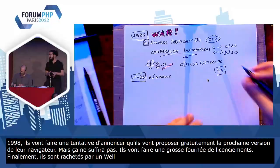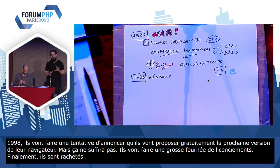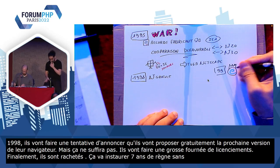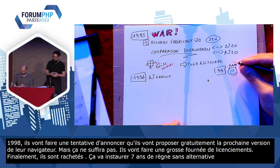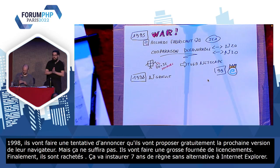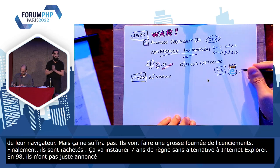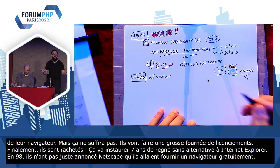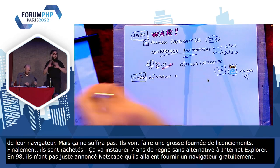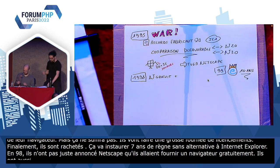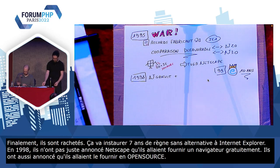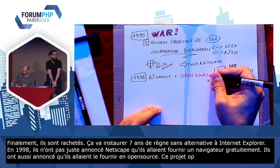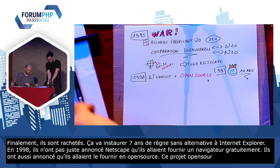Eh bien, ça va instaurer dix ans de règne. Très, très triste. Je dis dix ans de règne absolu, il y a eu sept ans sans véritable alternative à Internet Explorer. En 1998, ils n'ont pas juste annoncé qu'ils allaient fournir leur navigateur gratuitement. Ils ont aussi annoncé qu'ils allaient le fournir en open source. Tout le monde les prend pour des tards et personne ne fait ça. Et donc, ce projet open source, qui continue malgré le rachat par AOL, au départ, c'est juste un nom de domaine qui s'appelle mozilla.org.